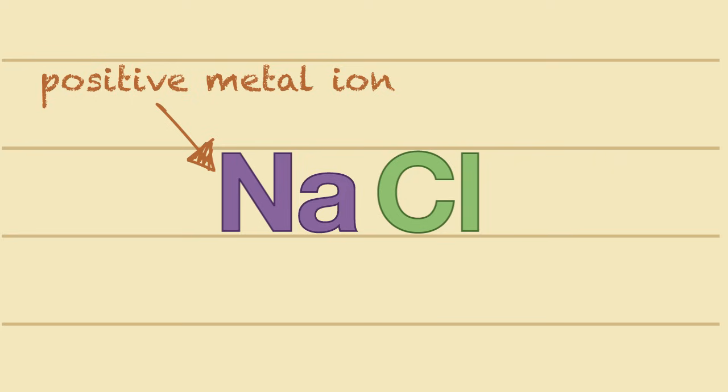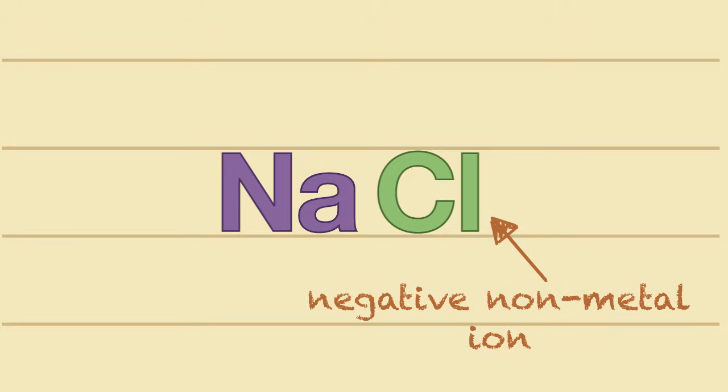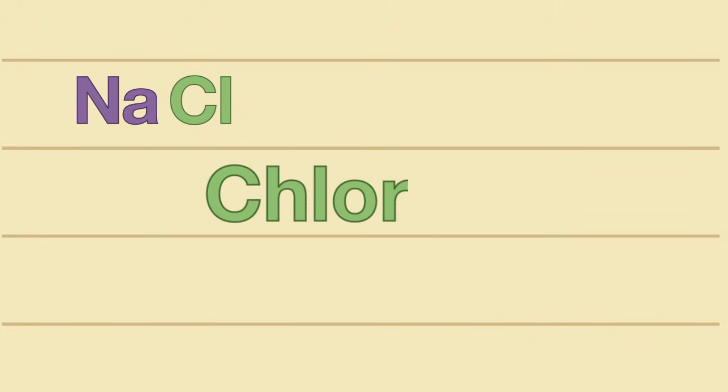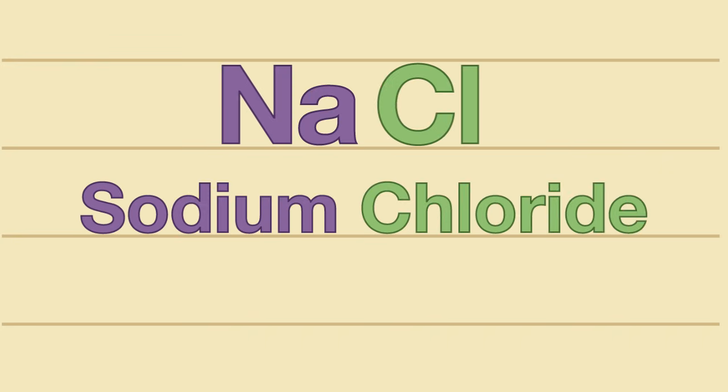The positive metal ion always comes first in both the formula and the name. For the negative nonmetal ions, the first syllable stays the same, but the ending is dropped and replaced with an '-ide'. Chlorine becomes chloride. So this ionic compound is called sodium chloride.